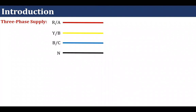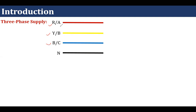Now we will go through three-phase supply. In case of three-phase supply, we have three lines and one neutral wire — so four wires in total. The three lines are known as R, Y, B, named from the color of the wires: red, yellow, and blue. It is also represented as A, B, and C.